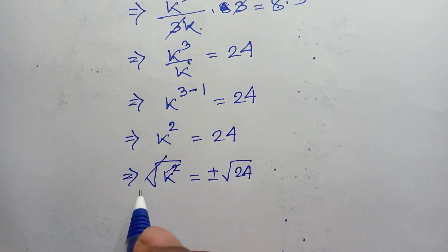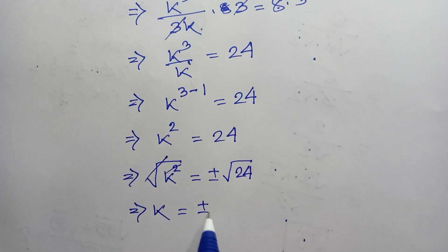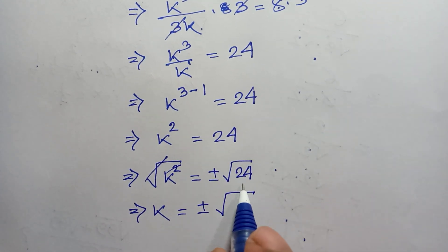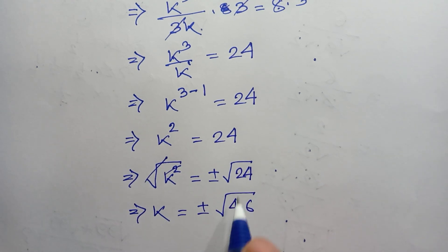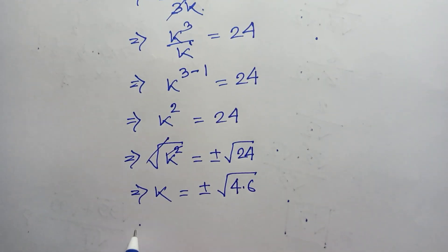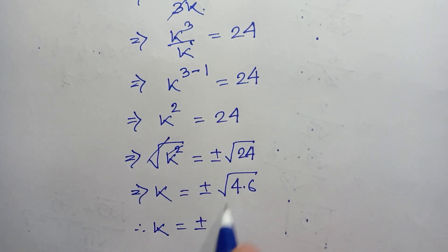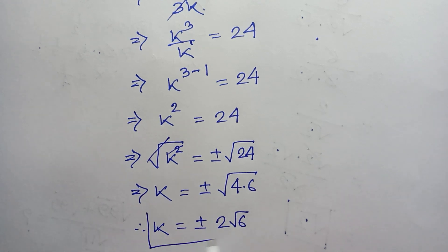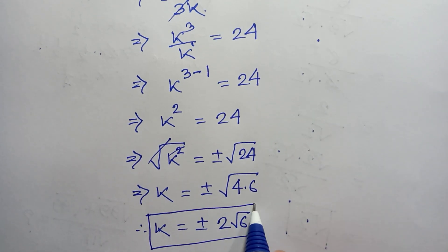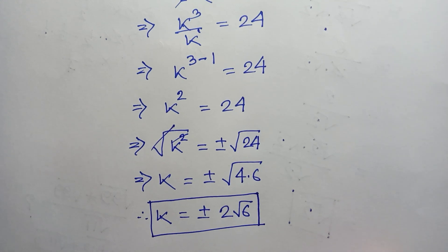The square root and square cancel out, so we get k equals plus or minus the square root of 24. Since 24 equals 4 times 6, we get k equals plus or minus 2 root 6. This is the value of k. Thanks for watching, please subscribe to my channel for more videos. Bye bye.